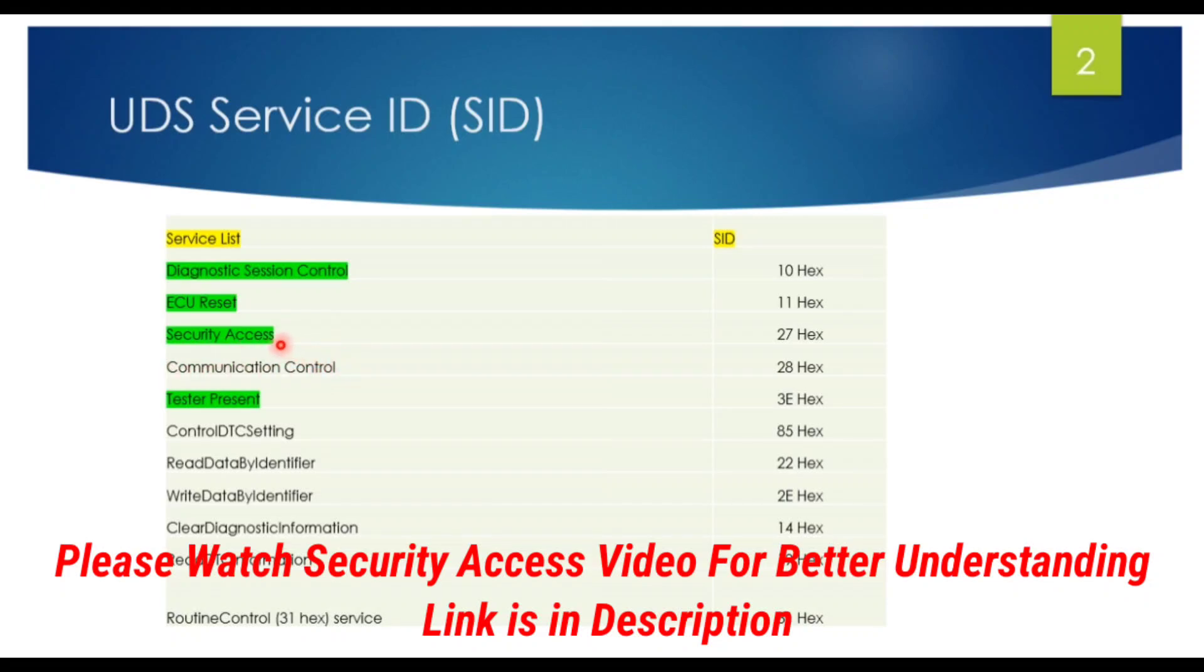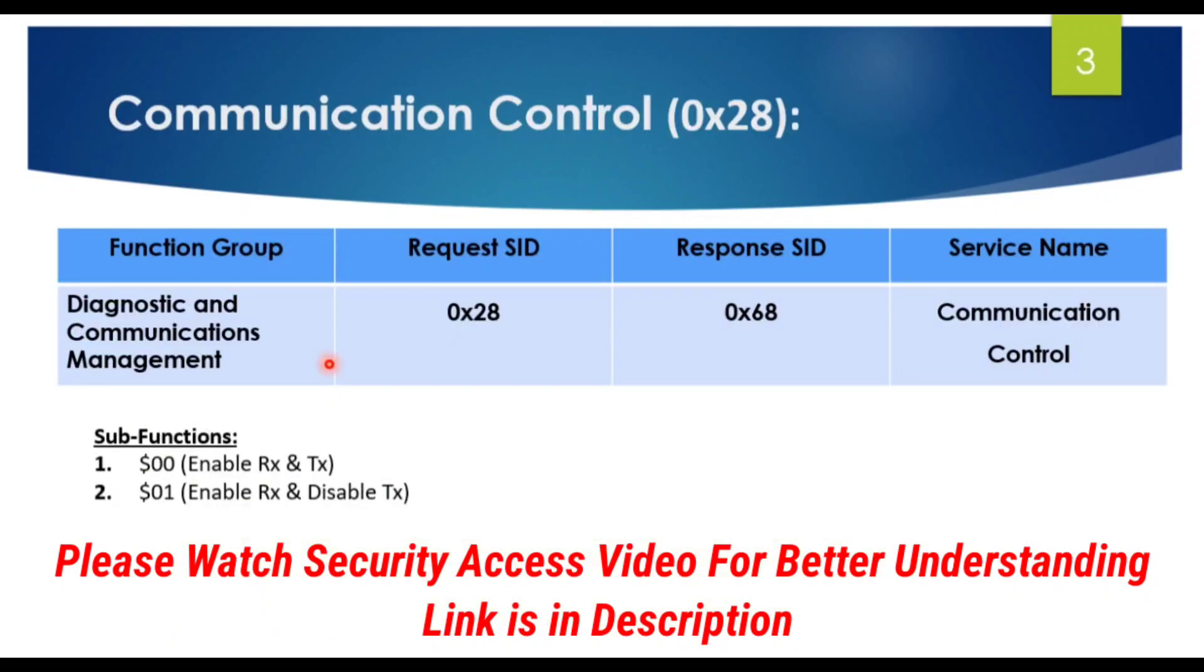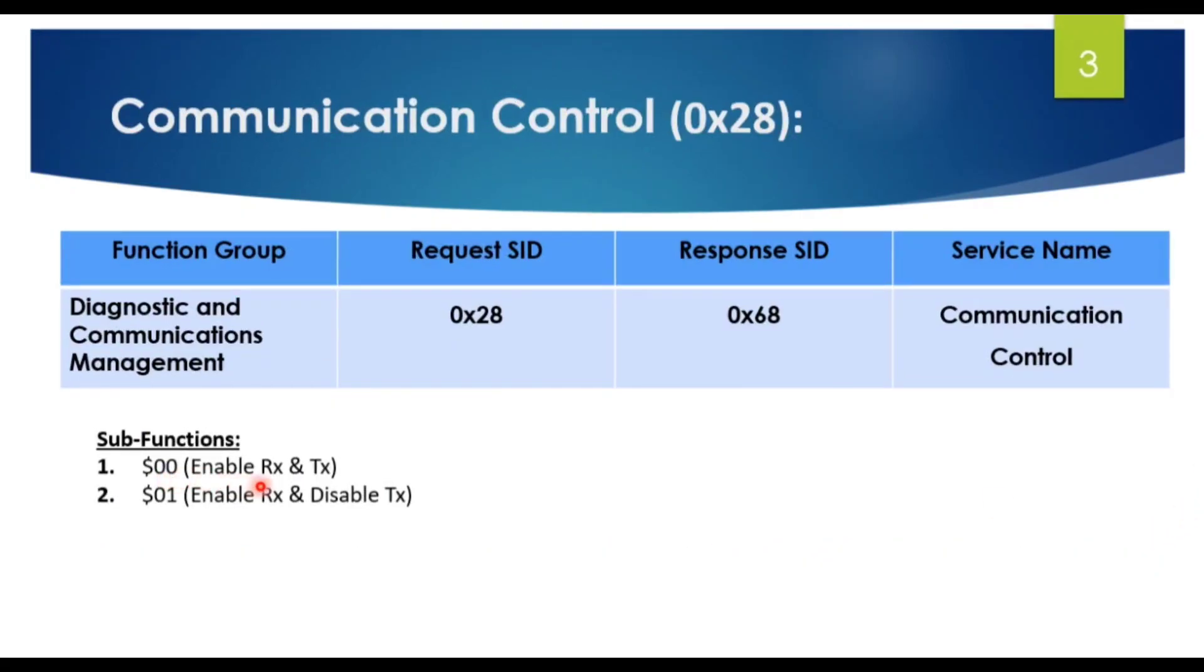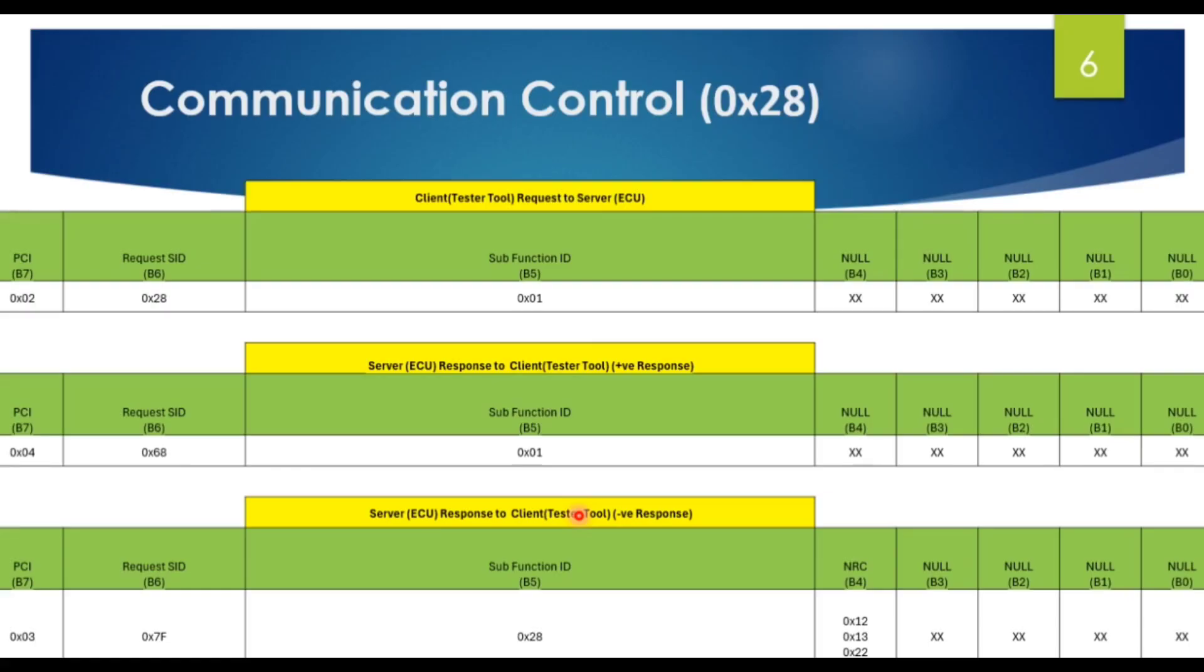Again, that's why I have explained security access earlier, and after security access, I am going to explain communication control. If you haven't watched the security access video, you can check the link in the description box. Remember, 0x00 means enable RX and TX, and 0x01 means enable RX and disable TX. Just remember, it will be useful in the next slide.